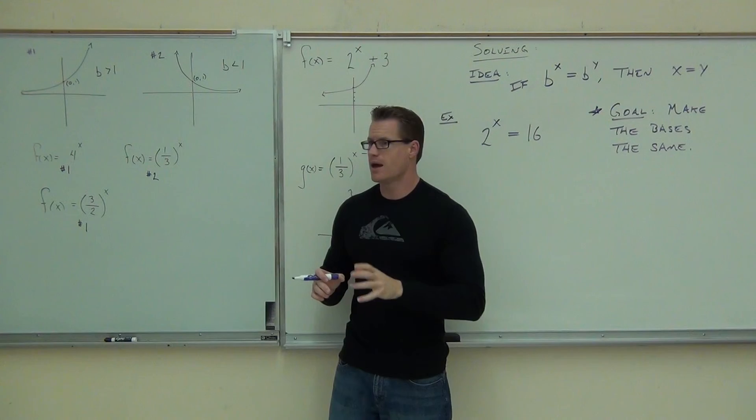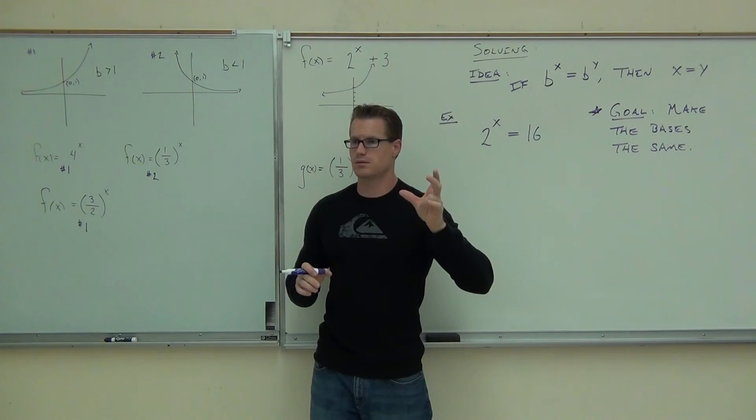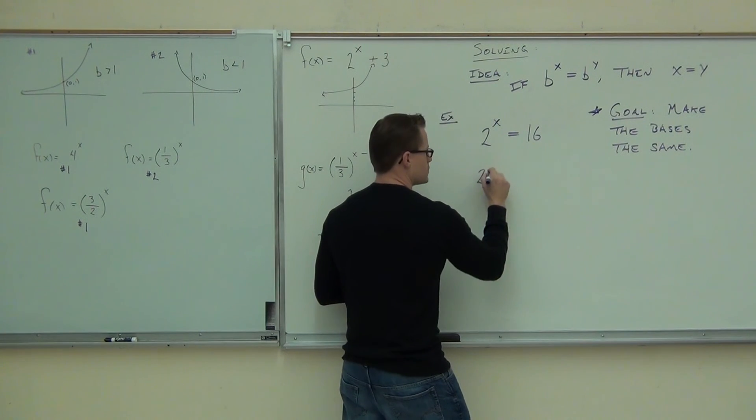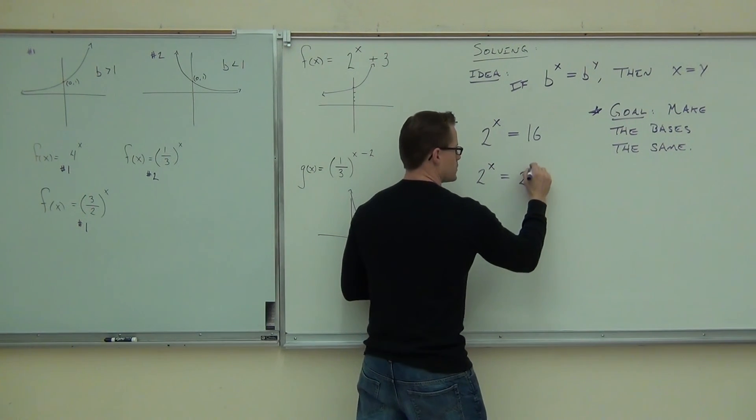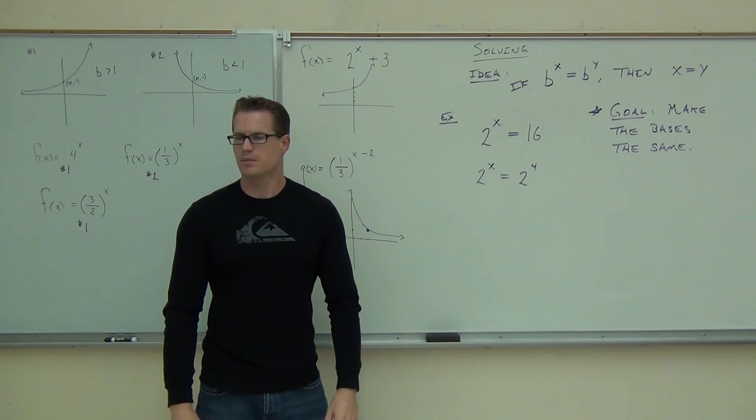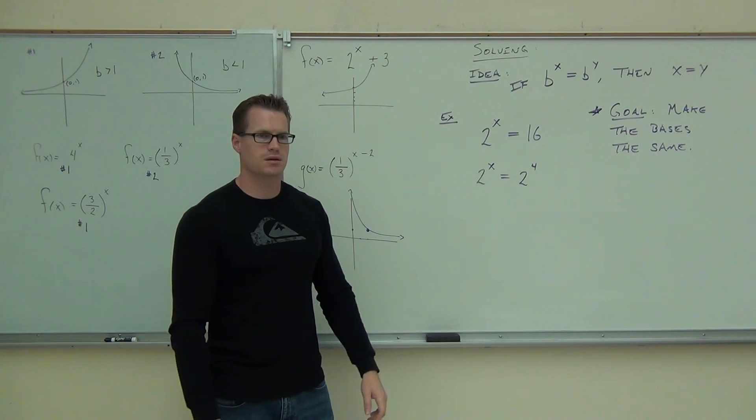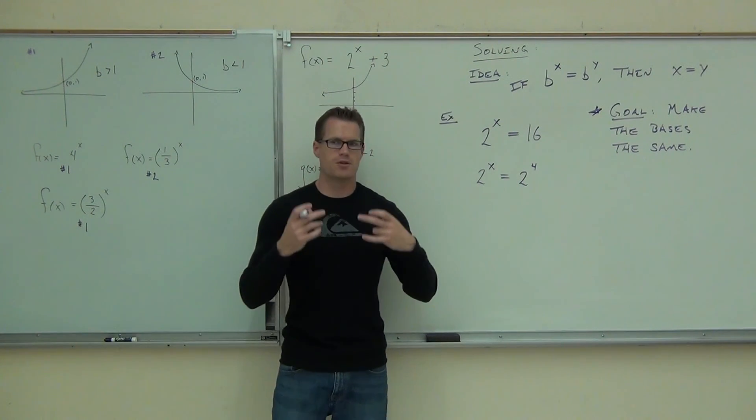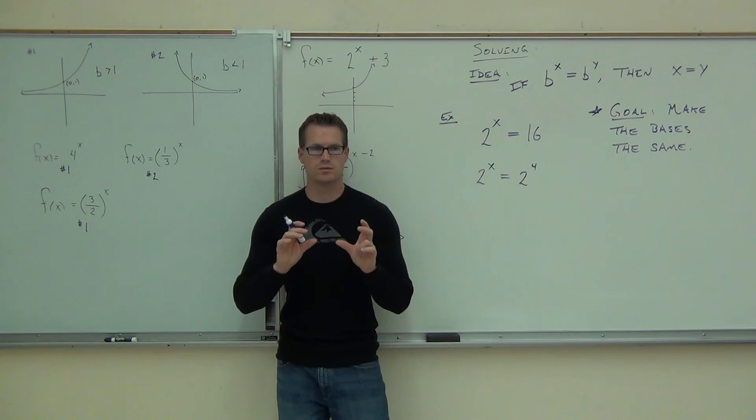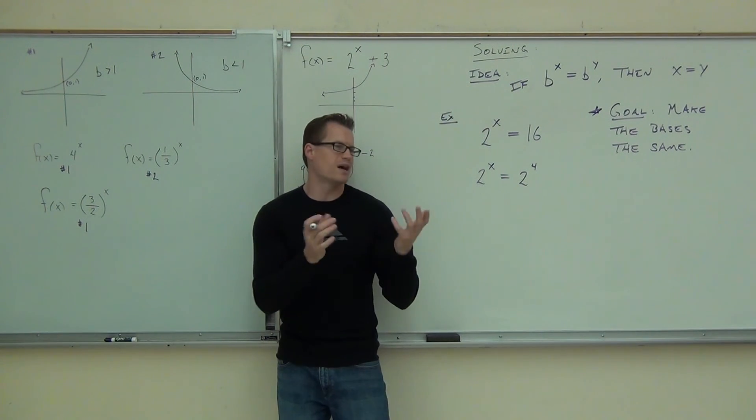Can you write that as a base of 2 to some power? 2 to the 4th. 2 to the 4th. So if we can translate this thing a little bit, we've got 2 to the x equals 2 to the 4th. Is that still the same thing as 16? Well, that's awesome. You know why that's awesome? Well, look at the problem. Do you have the same base? Right now, we know that if the bases are the same, the exponents must be equal. Do you follow me on that one?